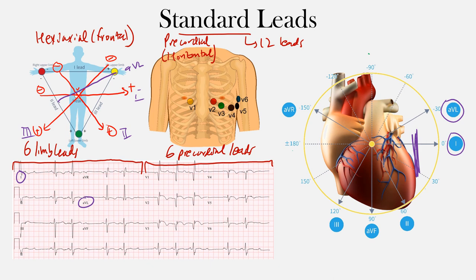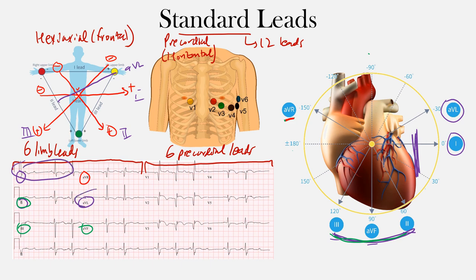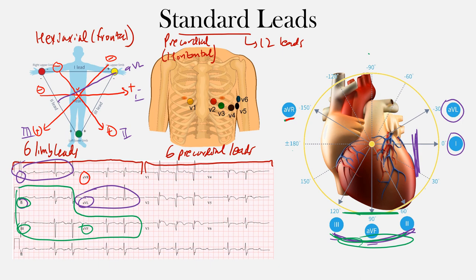Then we have the inferior leads, because they're taking a look at the inferior portion of the heart: leads two, AVF, and three — those make up the inferior limb leads. And then you have AVR, which gives you almost a position on the right but superior portion of the heart, and it can be very helpful in some cases we'll look at in upcoming lectures. So if there's a problem on the inferior portion of the heart, we'll look at the inferior leads. If we're looking for an issue at the lateral portion of the heart, we'll look at the lateral limb leads.